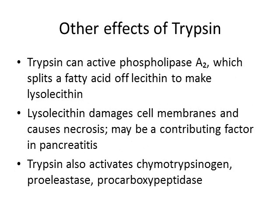Trypsin also has other effects besides breaking down proteins and activating trypsinogen. It can activate phospholipase A2, an enzyme that splits fatty acids off lecithin to make lysolecithin. Lysolecithin is known to combine with and damage cell membranes, causing cell necrosis, and is thought to be a contributing factor in pancreatitis. In pancreatitis, zymogen granules leak, trypsin escapes and starts digesting the pancreas, and phospholipase A2 activation causes further damage via lysolecithin.